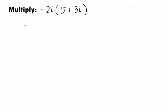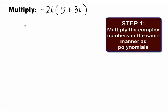In this example, we want to multiply negative 2i times 5 plus 3i. In Step 1, we can multiply the complex numbers in the same manner as polynomials.